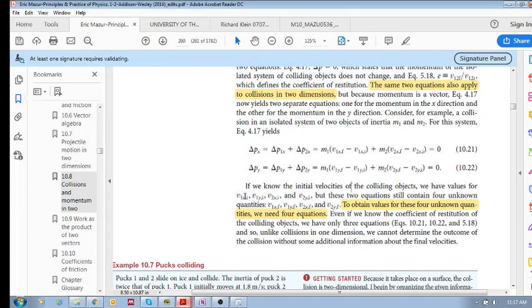So we've got all those initial x and y components, but these two equations still contain four unknown quantities, which is all your final velocities: x1 - sorry, object one in the x and y final, and object two.